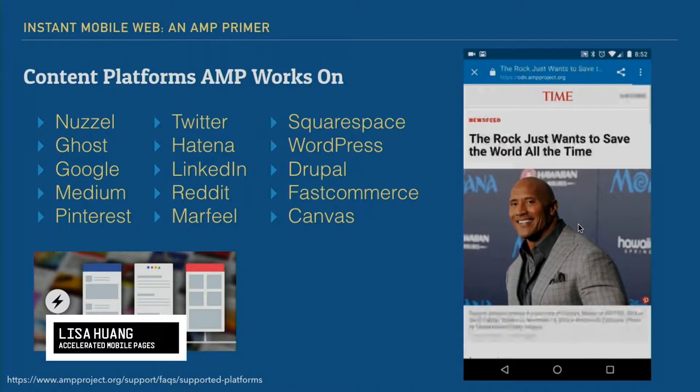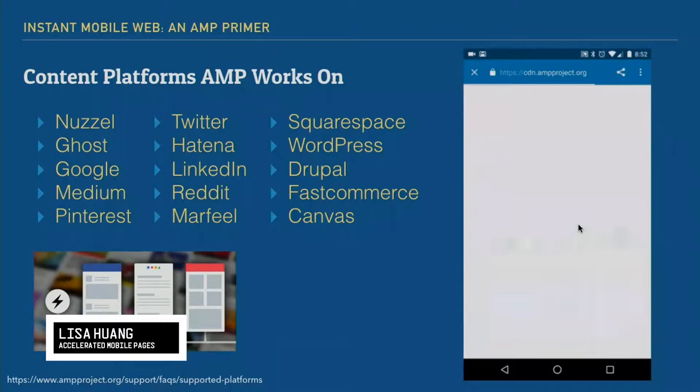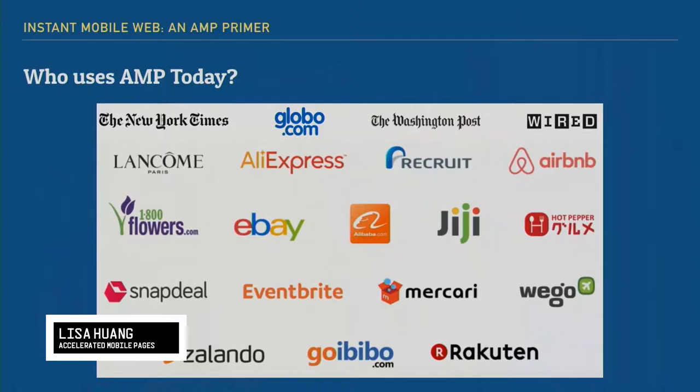After you click on an AMP result, it loads within literally two seconds — a really fast, instant loading experience for users. When it comes to who uses AMP today, I know frameworks come and go, repos come and go, especially open source. One of my concerns was how reliable it is and whether we can have confidence to adopt it. As you can see, there are a lot of big companies using it. In the UK, both Guardian and BBC, as well as some other major publications, do use AMP pages.